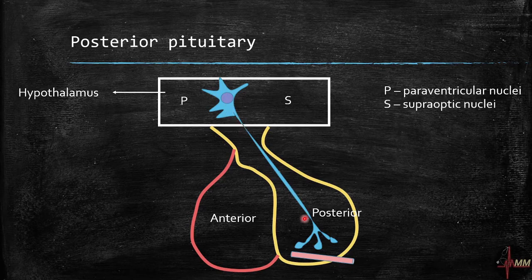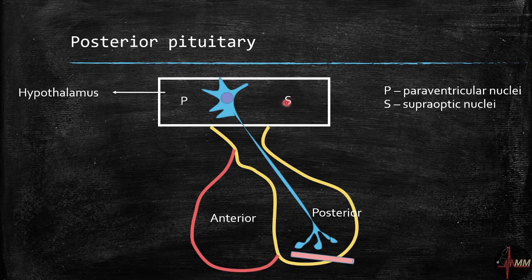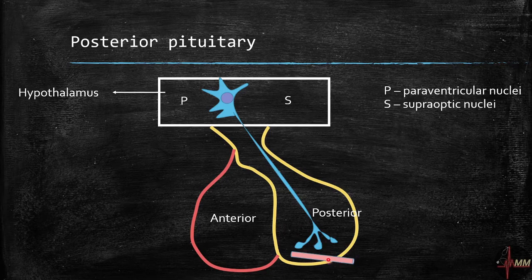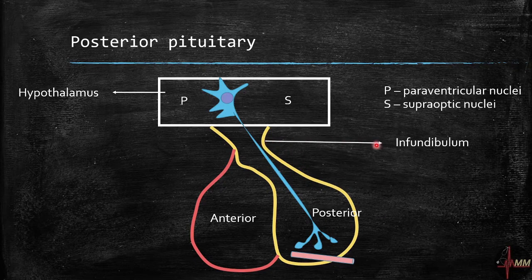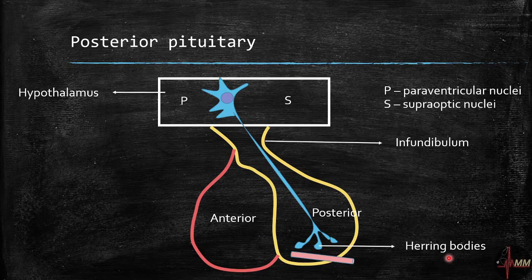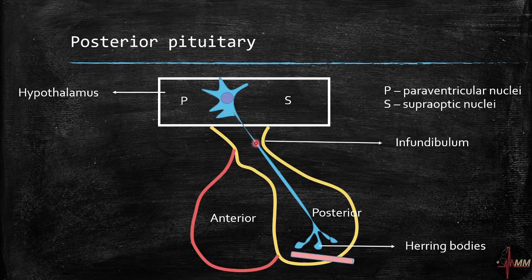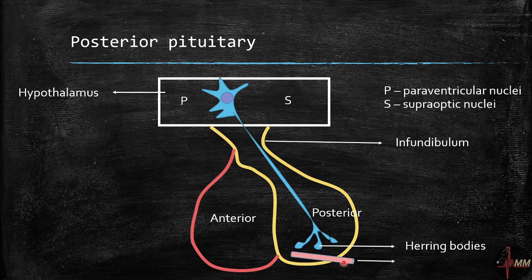The neuron's cell body is located in the hypothalamus — in the paraventricular and supraoptic nuclei — while the axons and nerve endings are located in the posterior pituitary, near the hypophysial veins. The hormones are synthesized in the cell bodies, transported along the axons, and stored in the nerve endings as herring bodies, from which they are secreted into the blood circulation.